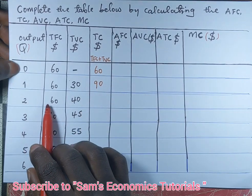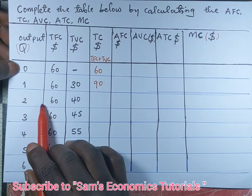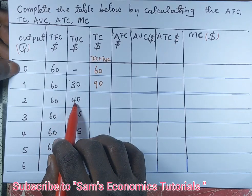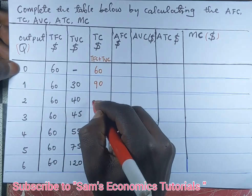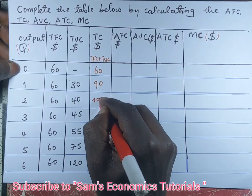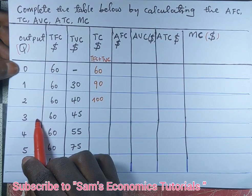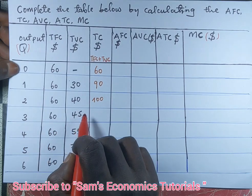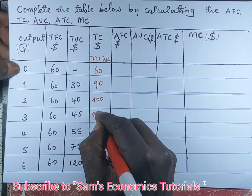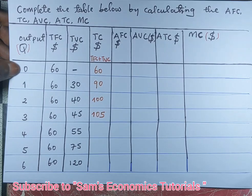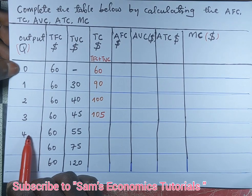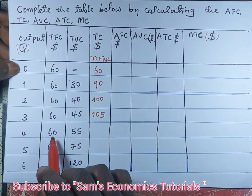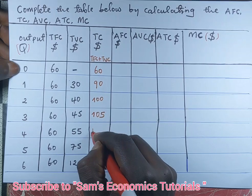After producing two units, we have a total cost of 60 plus 40, which gives us 100 US dollars. When the firm produces three units of output, the total cost is 60 plus 45, which gives us 105 US dollars. When the firm produces four units of output, we have a total cost of 60 plus 55, which gives us 115 dollars.